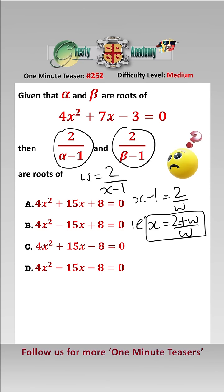So now what we can do is put that into this quadratic here, and that gives us 4 times 2 plus w over w squared, add 7 times 2 plus w over w, minus 3 equals 0.